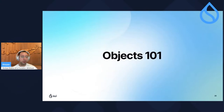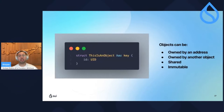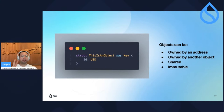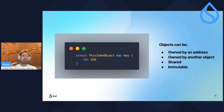Before we do that, it's important to talk about objects. What are objects? Objects are essentially the building blocks of the SWE network. Every object has to have these two characteristics: it has to have the has key keyword, and the first field must be this UID, essentially this unique global ID.